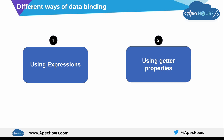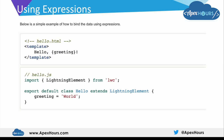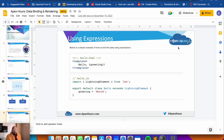In lightning web components you can bind your data in two ways - either using expressions or using getter properties. In this video I'll show you live examples of both. Below is a simple example of how you can bind data using an expression: you bind your JavaScript expression to LWC using curly braces. You just declare the expression in JavaScript and use it between curly braces in your HTML.